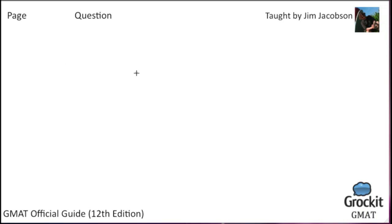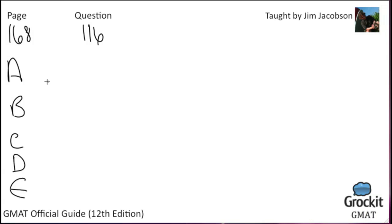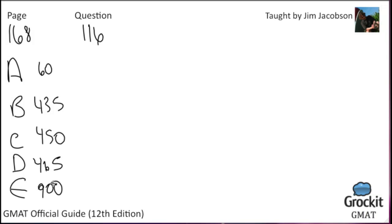Question 116, page 168. Answer choices are 60, 435, 450, 460, and 900. Each dot in the mileage table represents an entry indicating the distance between a pair of five cities. If the table were extended to represent distances between all pairs of 30 cities, and each distance were represented by only one entry, how many entries would the table then have?